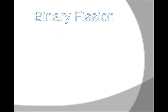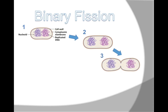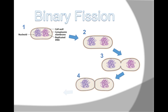Binary fission: first, the cell replicates its DNA. Following is the cytoplasmic membrane elongation, separating the DNA molecules. A cross wall forms in a process of membrane invagination. Finally, the cross wall forms completely and a daughter cell is born.